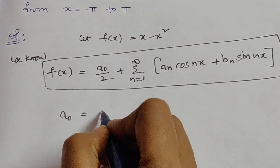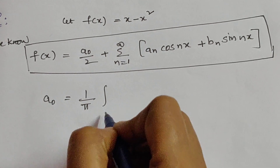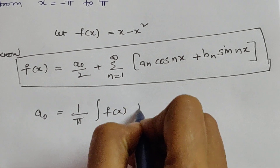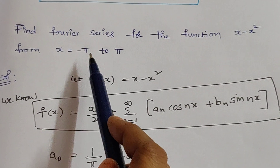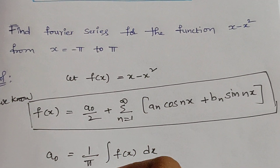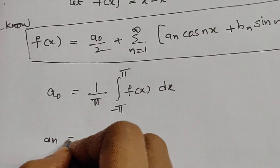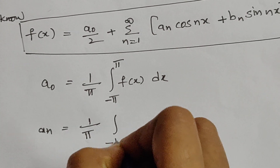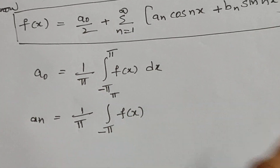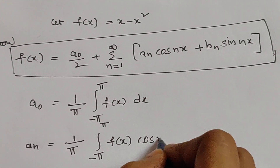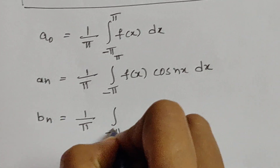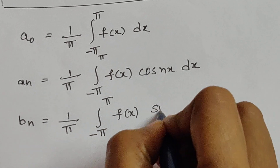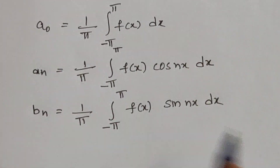To find a naught, the formula is a naught equal to 1 by pi integral from minus pi to pi of f of x dx. a n equal to 1 by pi integral from minus pi to pi of f of x cos nx dx. b n equal to 1 by pi integral from minus pi to pi of f of x sin nx dx. These are the three Fourier coefficients a naught, a n, and b n.